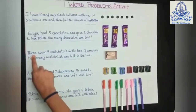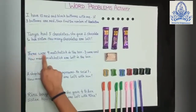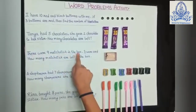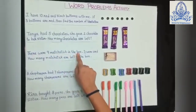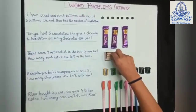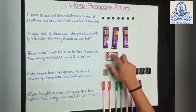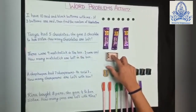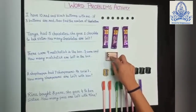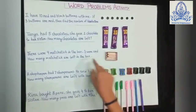Next, number 3. There were 9 matchsticks in the box. Let me count: 1, 2, 3, 4, 5, 6, 7, 8, 9. There are 9 matchsticks in the box.